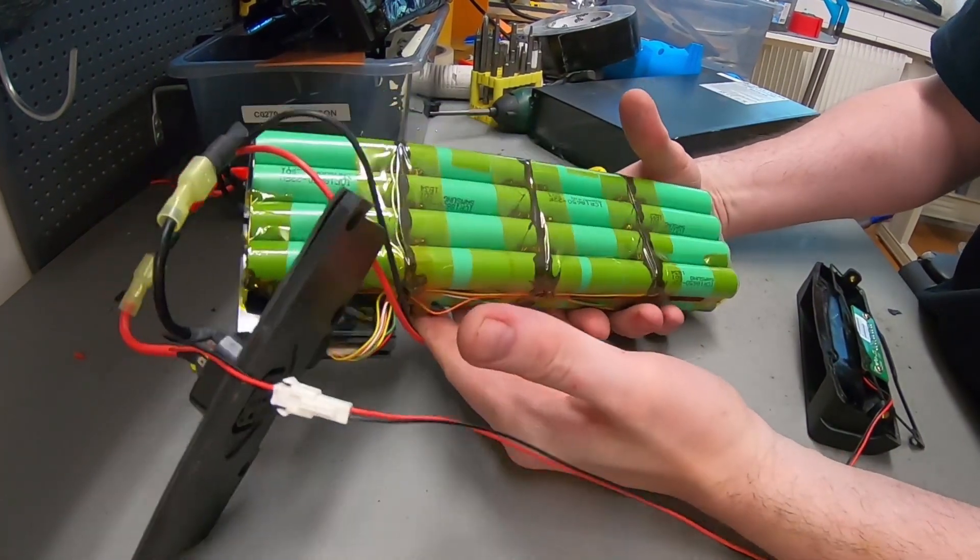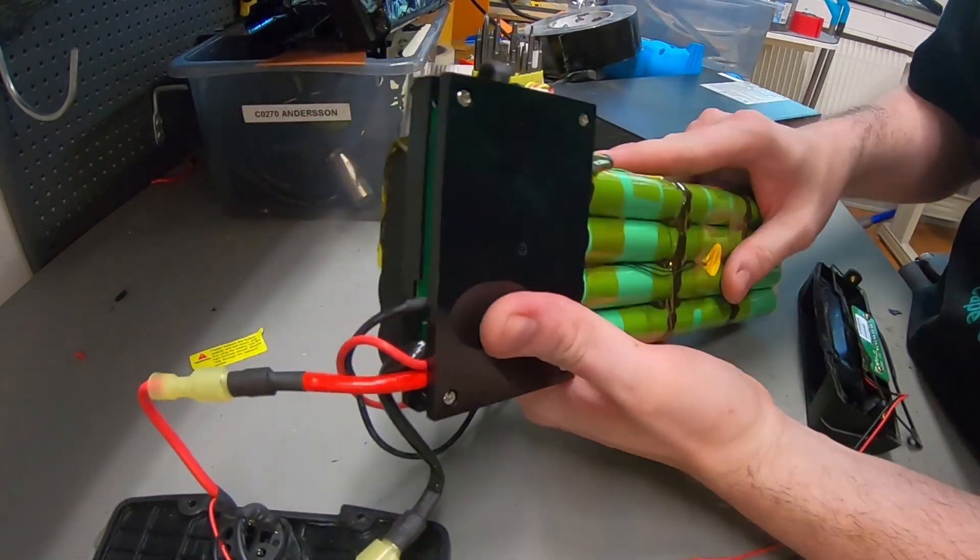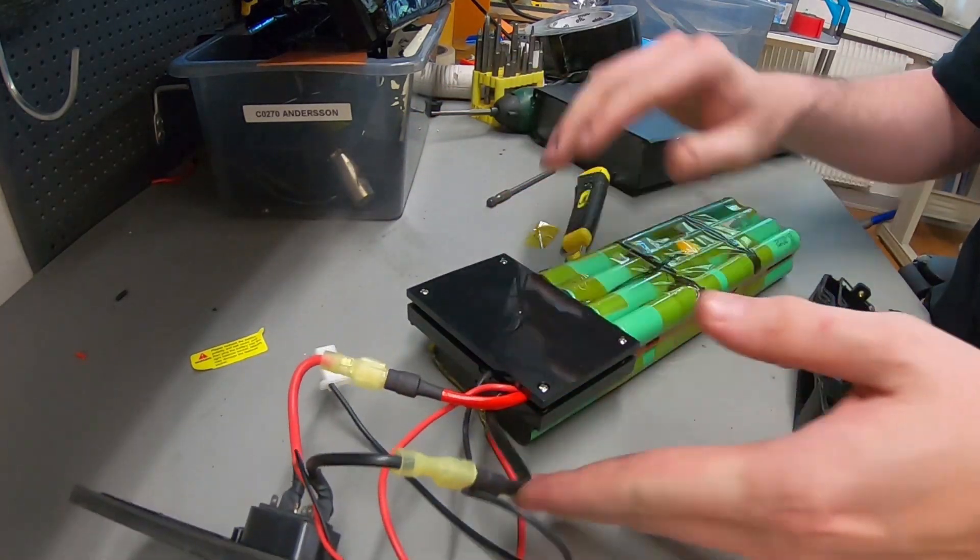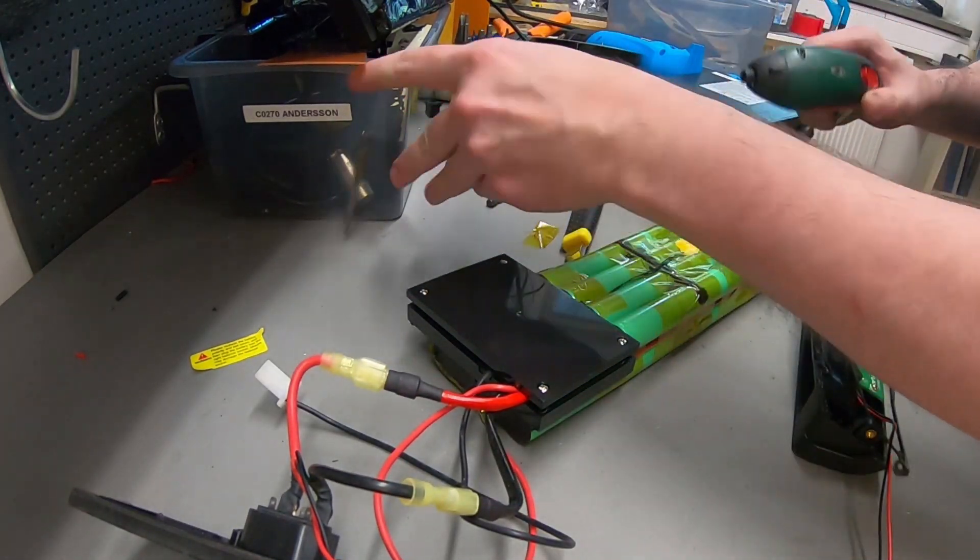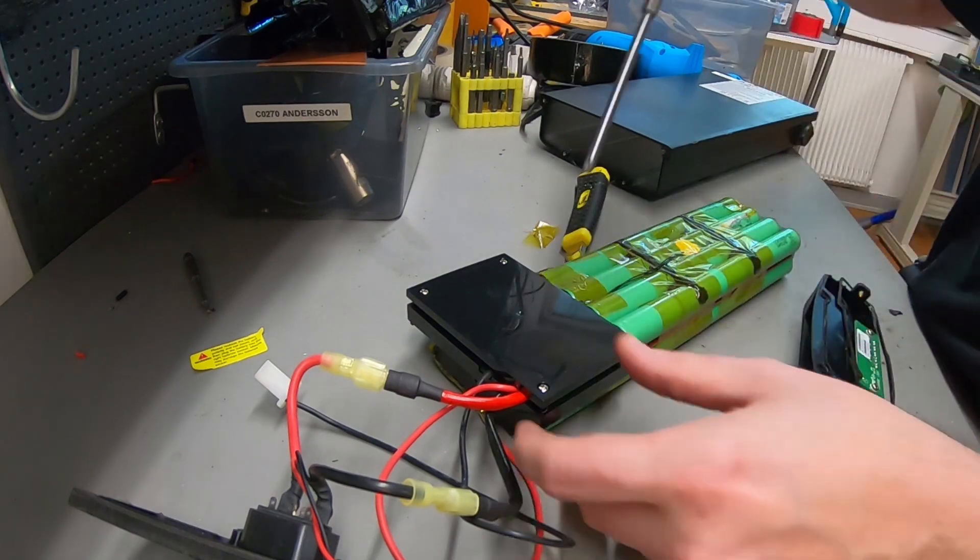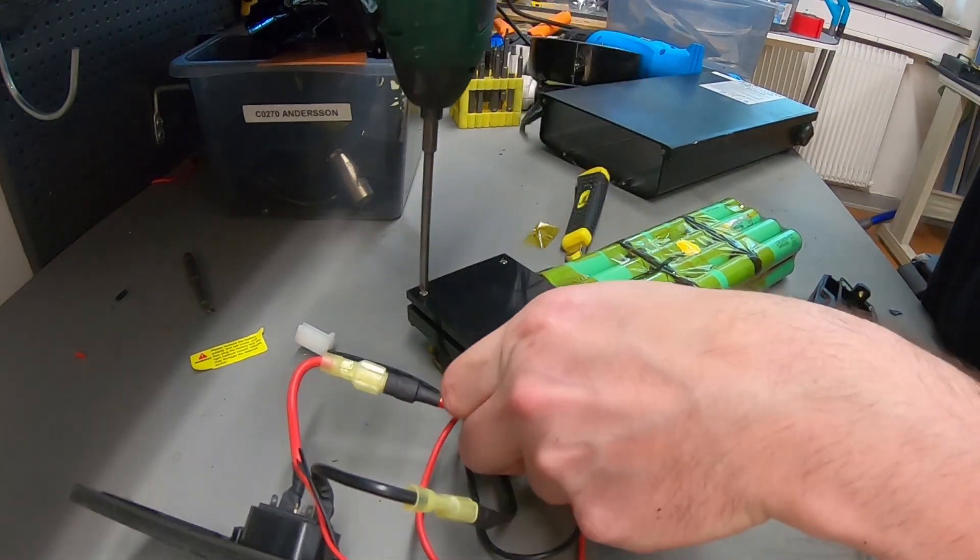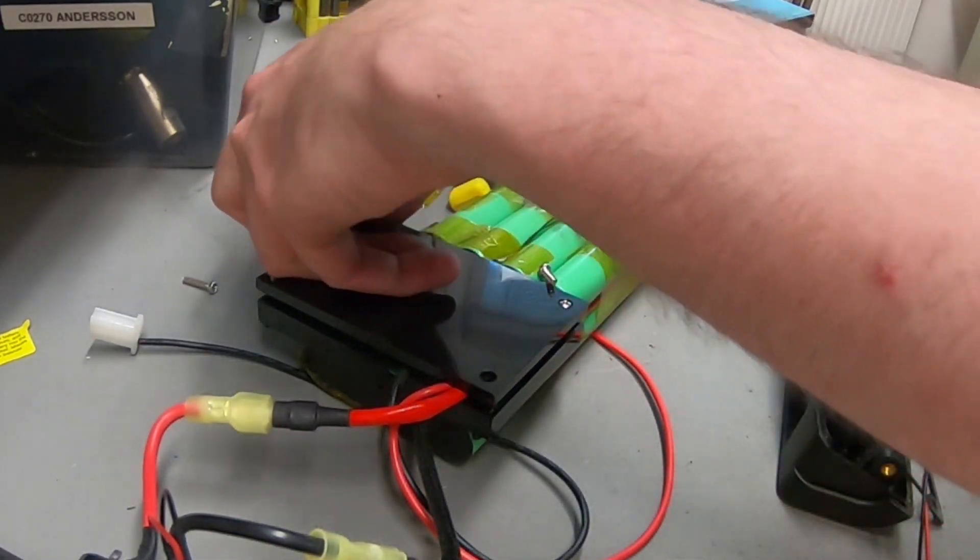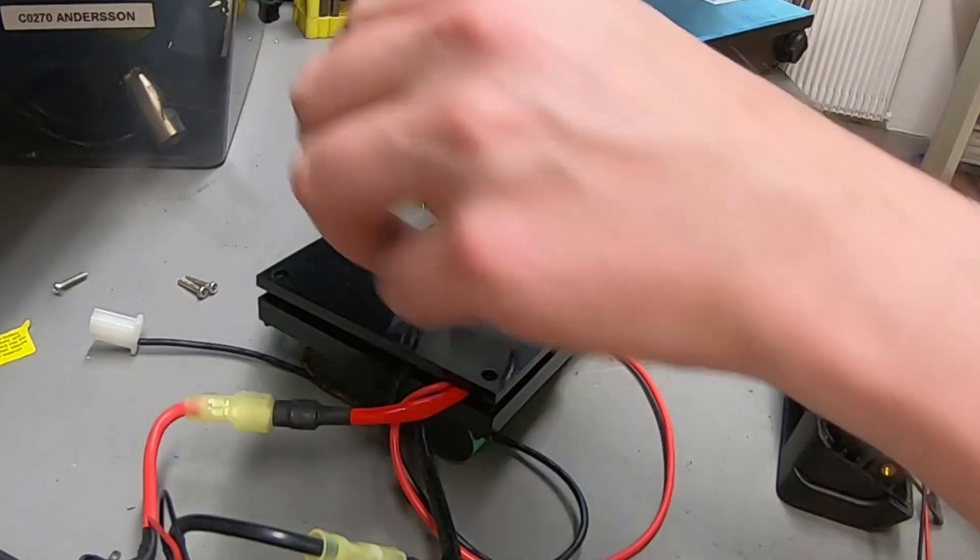The config is pretty simple, but then they add this monstrosity of a BMS. Yes, and I think I've seen this type of BMS before. Couldn't they have found a smaller BMS? It's a 250 watt e-bike.